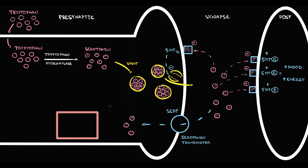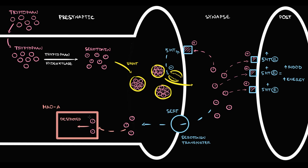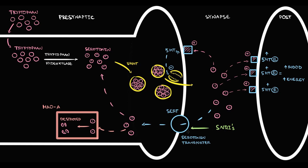What happens to serotonin molecules that did not have time to bind to any receptor? On the presynaptic neuron we have the serotonin transporter, called SERT. This transporter uptakes free serotonin molecules and delivers them back to the presynaptic neuron, where monoamine oxidase A is waiting. Most delivered serotonin molecules are destroyed by MAO-A, but some slip away and replenish the serotonin pool.